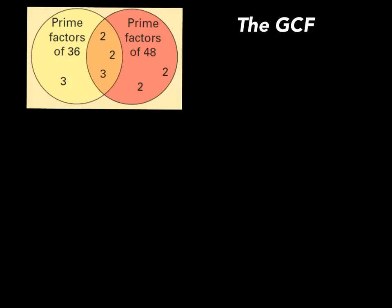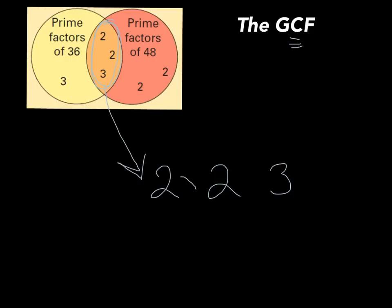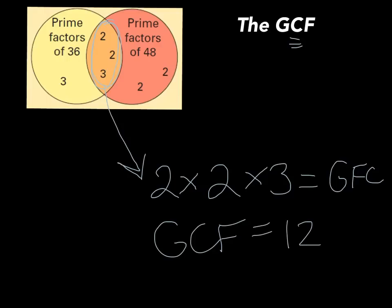Now that we know how to place our factors in the Venn diagram, let's figure out how to find the greatest common factor. There's a word hint here: GCF stands for greatest common factor, and the middle of the Venn diagram is the area for what's common. So to find the GCF, simply multiply the numbers in the middle. In this case, the common numbers are 2, 2, and 3. So 2 × 2 × 3 = 12. The greatest common factor is 12.